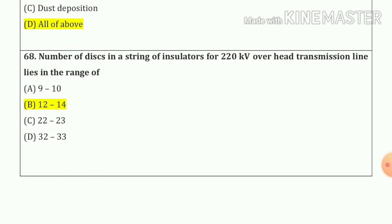Question number 68: number of discs in a string of insulators for a 220 kV overhead transmission line lies in the range of 12 to 14 — option number B.